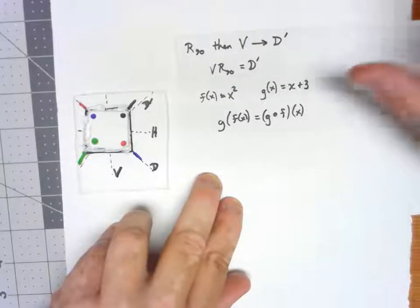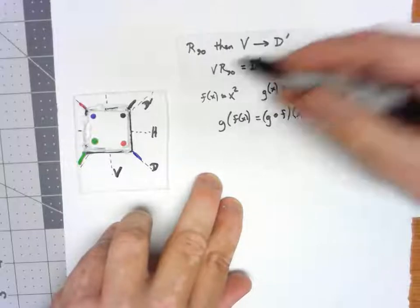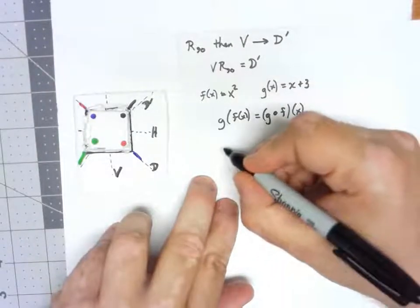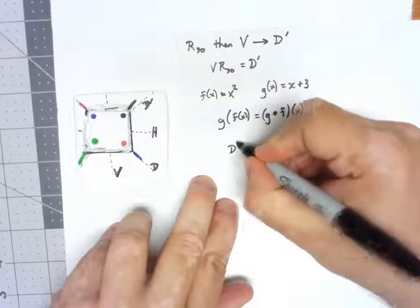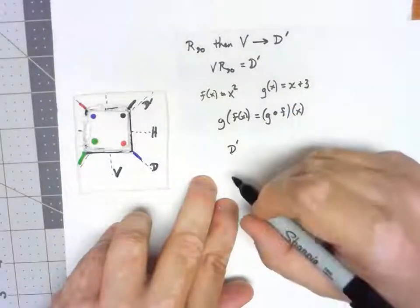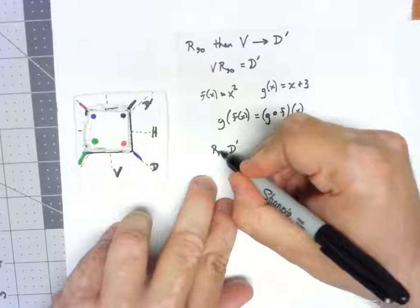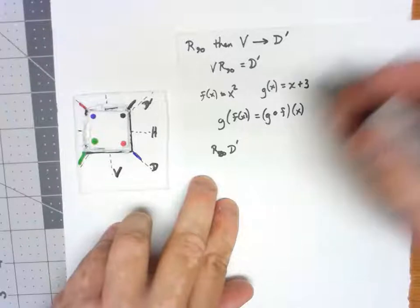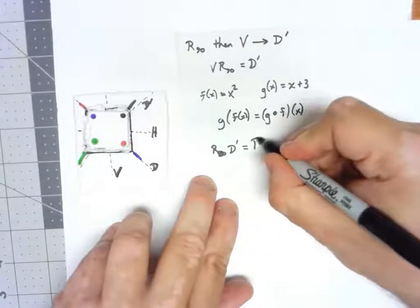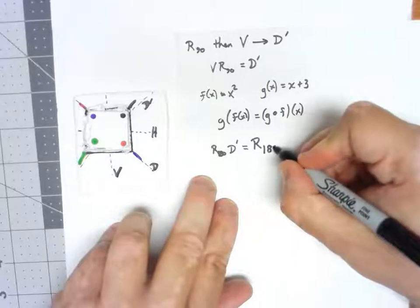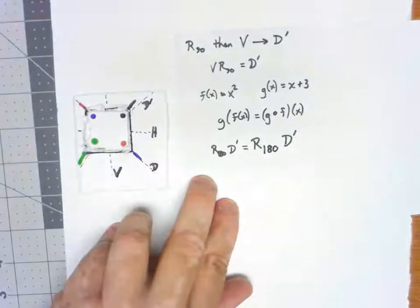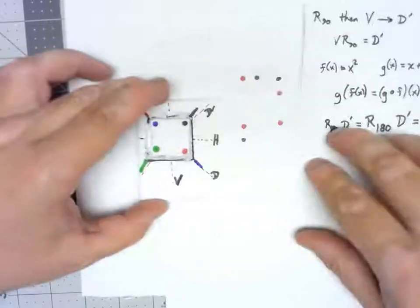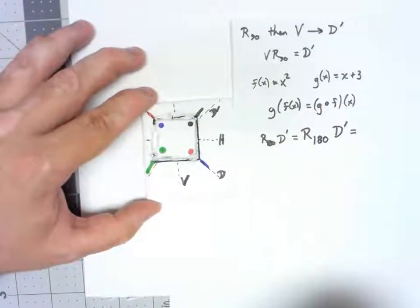Let's go ahead and take a look at just one more of these compositions of these things. What we do first is on the right, whatever we do second is on the left. First of all, we're doing a d prime.